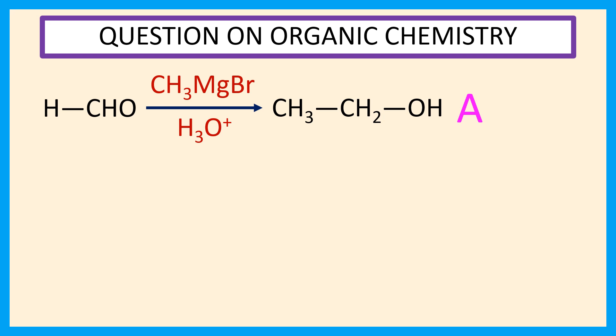Reaction of ethyl alcohol with PBr3 produce CH3CH2Br that is ethyl bromide. So, our compound B is ethyl bromide.